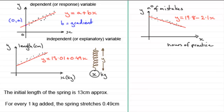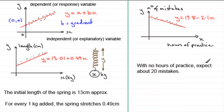Take a moment to think about the interpretation before continuing. For 19.8: we can't just say it's where the regression line cuts the y-axis. When x equals 0 — with no hours of practice — the music teacher can expect the student to make approximately 20 mistakes. We round to 20 because the number of mistakes must be a whole number, so: with no hours of practice, expect about 20 mistakes.